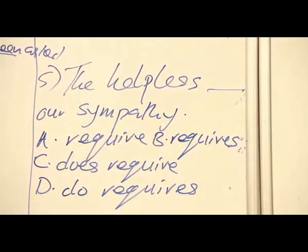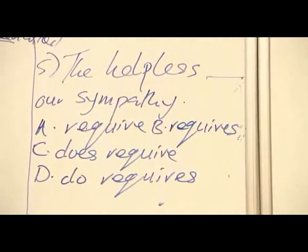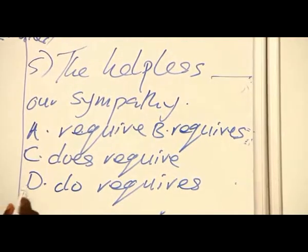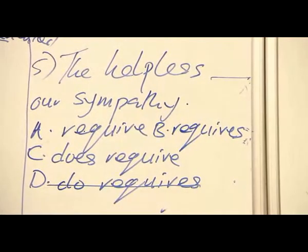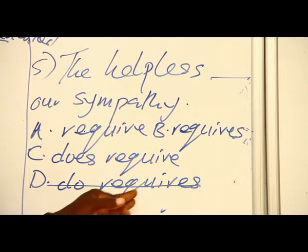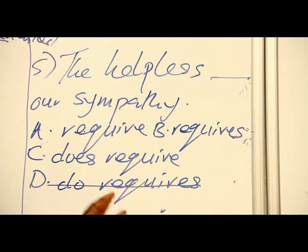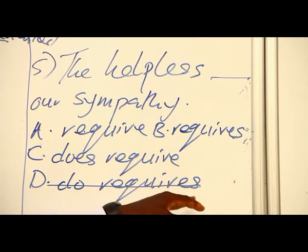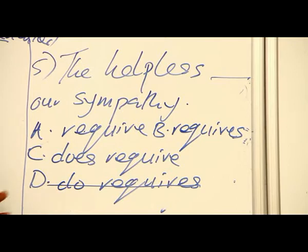Well, we look at this. First of all, even without looking at our sentence, we may remove D, because that is an awkward grammatical construction. Once we use the 'do' verb as an auxiliary, whatever verb comes after — the main verb — cannot take an S. So that will help us to remove D, if you know that principle. And that will leave us between A and C.